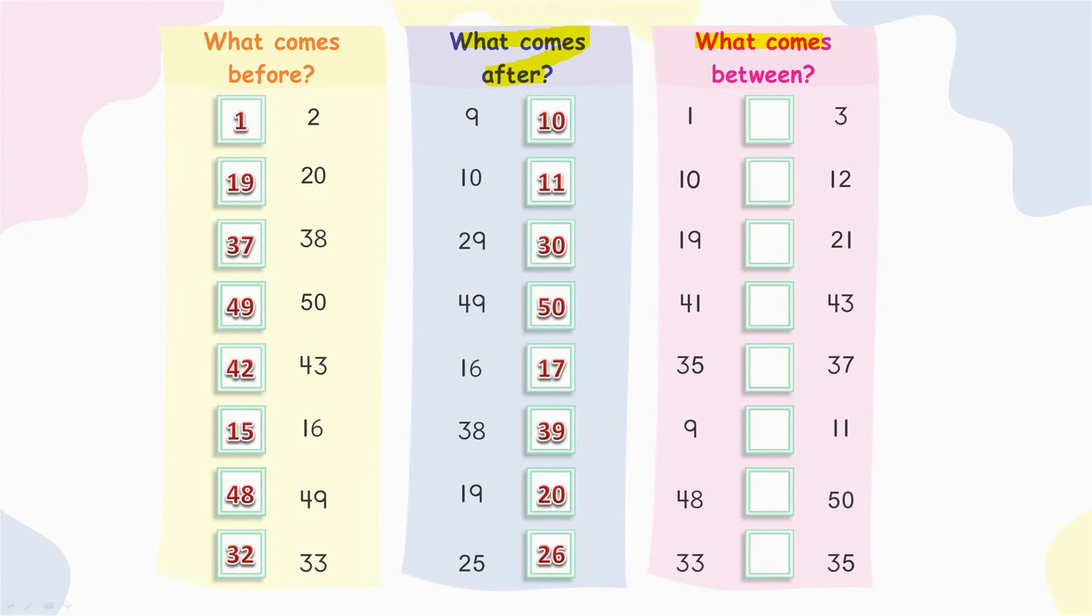What comes between? Between. To be between two things is to be in the middle. One and three. What comes between? Two. Very good.